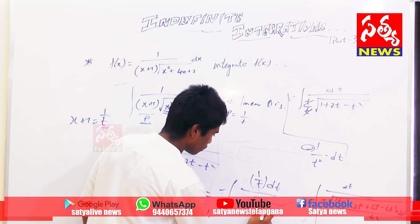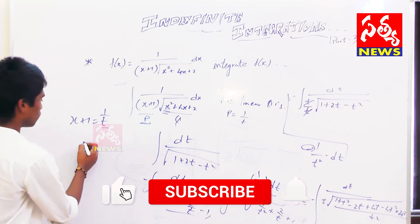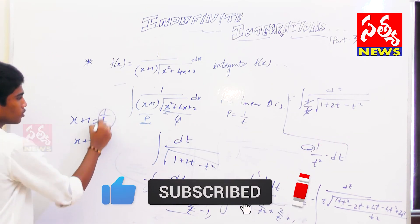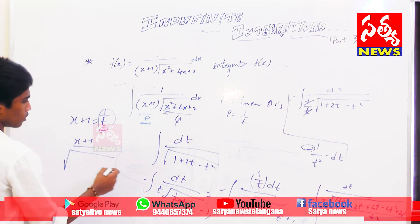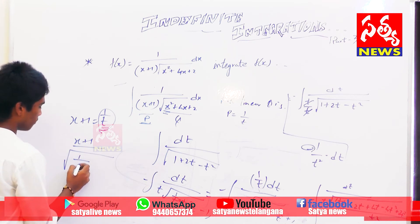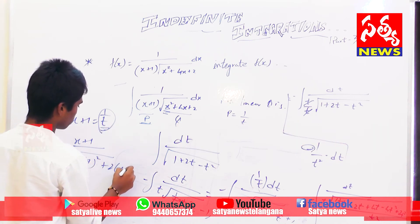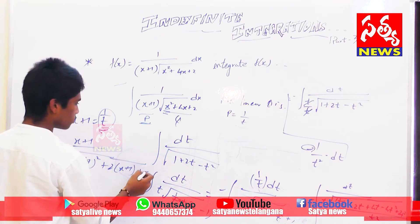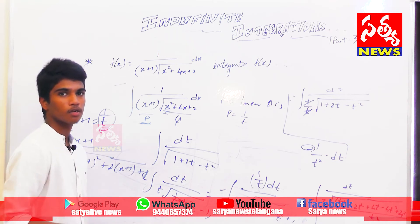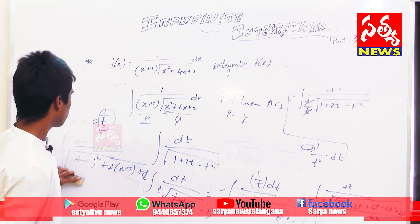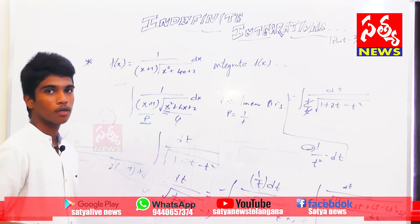The expression under the root becomes (x+1)² + 2(x+1) + 1. This gives a direct integration. I have given the key problem solution in the description — you can see it there.